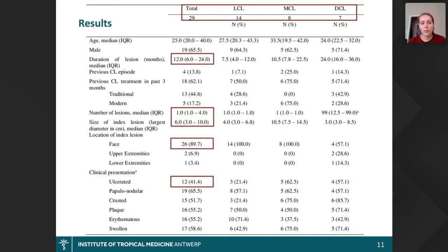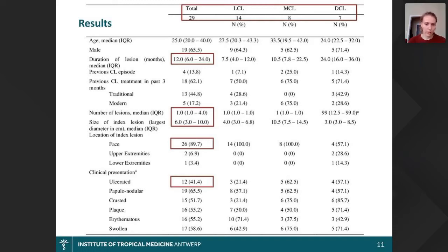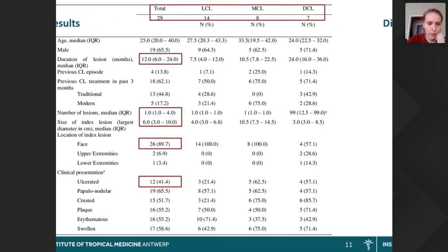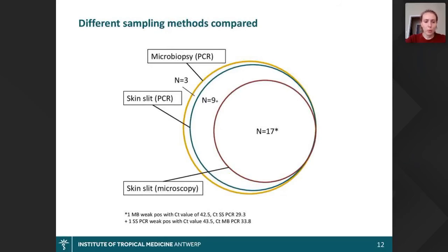Moving to the results: we included 29 patients in total, including some MCL and DCL patients along with LCL patients. The lesions were generally quite severe — most patients had a lesion of about one year's duration, a median size of 6 centimetres, and most lesions were on the face, which increases their impact. Ulceration was not one of the most common lesion presentations. Surprisingly, the microbiopsy was able to detect most patients, which was not what we expected given that the sample is much smaller than for the skin slit.